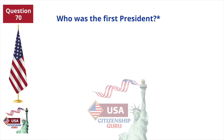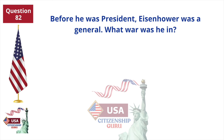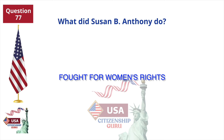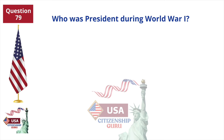Who was the first president? George Washington. Before he was president, Eisenhower was a general — what war was he in? World War II. What did Susan B. Anthony do? Fought for women's rights. Who was president during World War I? Woodrow Wilson.